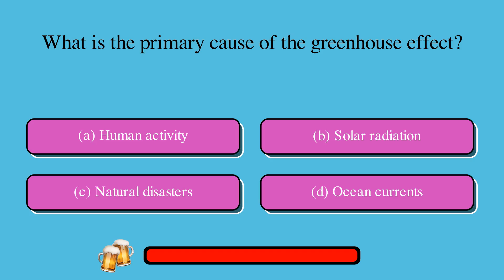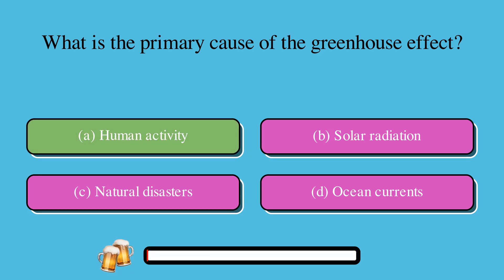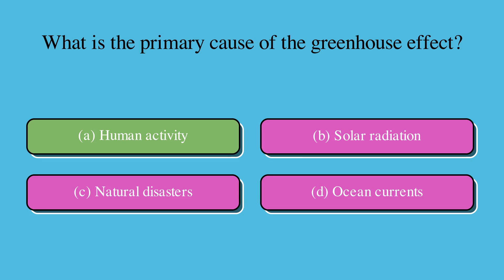What is the primary cause of the greenhouse effect? A. Human activity, B. Solar radiation, C. Natural disasters, or D. Ocean currents? The correct answer is A. Human activity.